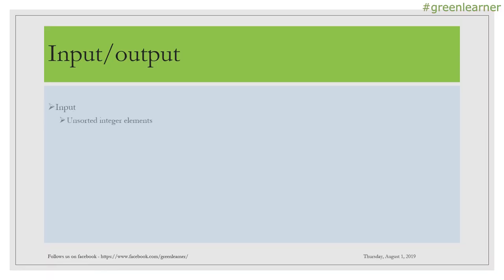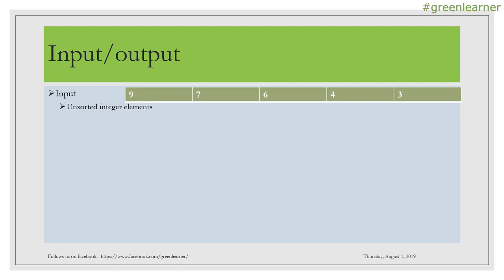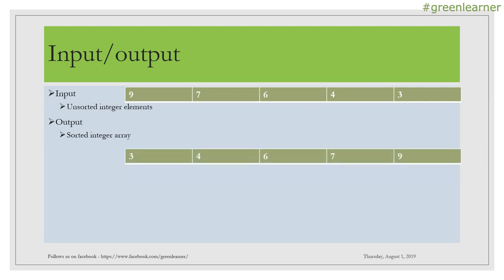The input is an unsorted integer array. I have taken nine, seven, six, four, three — which is in completely reverse order. We will sort this using the bubble sort algorithm. The output will be the sorted array: three, four, six, seven, nine.